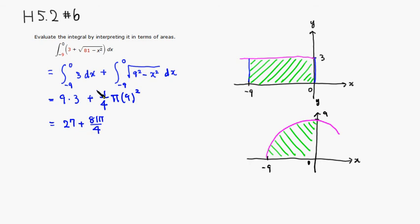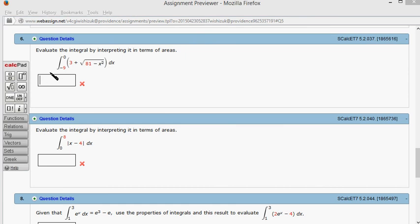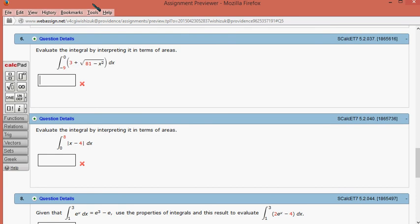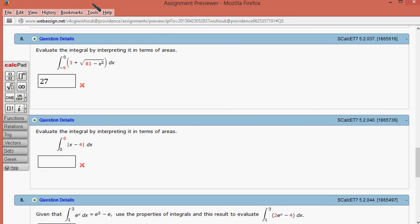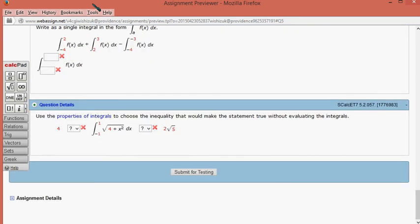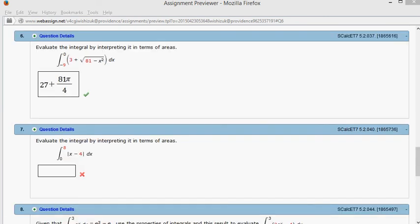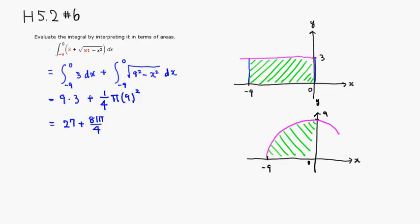So let's type it in. 27 plus 81 π over 4. Let's submit for testing. I came back, and it looks like we got this one correctly. That's it, I hope that this was clear.